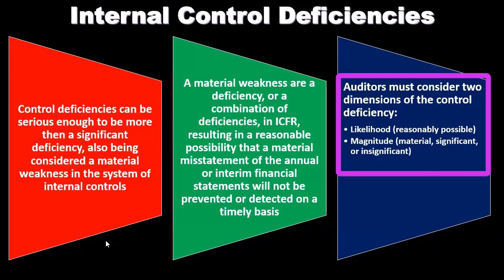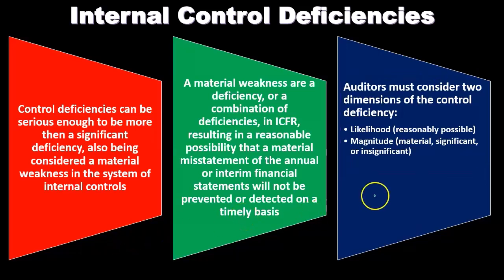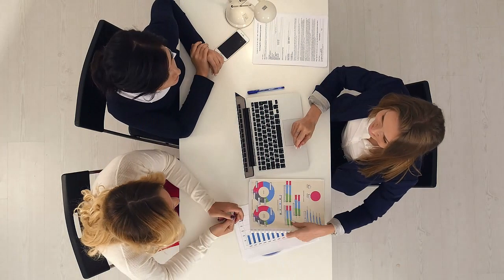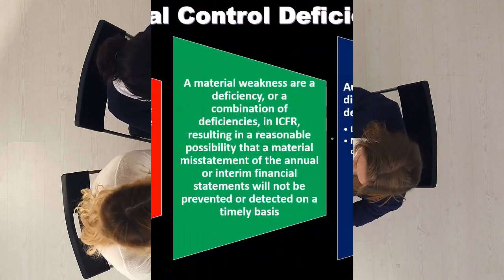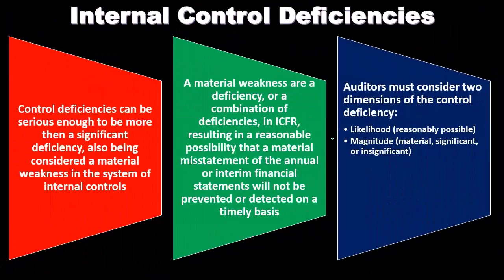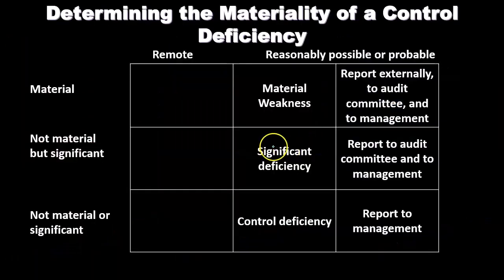Auditors must consider two dimensions of the control deficiency. First, likelihood — is it reasonably possible? Second, magnitude — is it material, significant, or insignificant? We're trying to measure these deficiencies by asking how likely something is to happen and then thinking about the magnitude, which ties into the consideration of materiality.